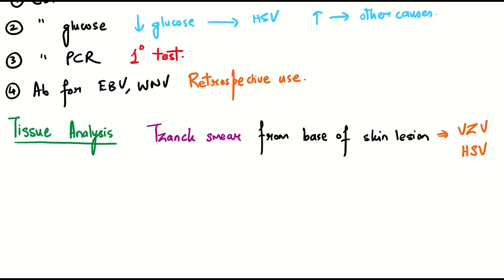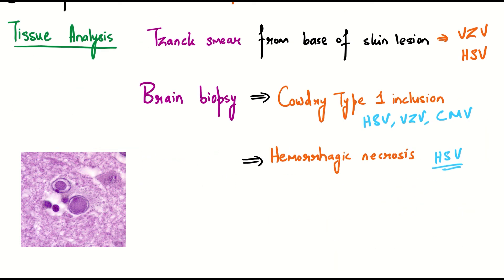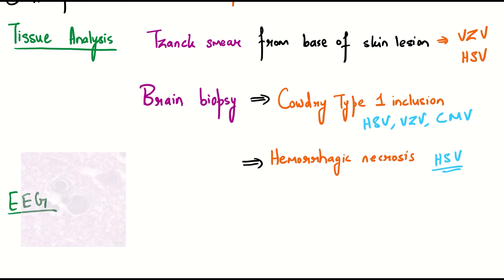Brain biopsy reveals Cowdry type 1 inclusion bodies and hemorrhagic necrosis in herpes simplex virus, varicella zoster virus, cytomegalovirus, and herpes simplex virus respectively. EEG will show temporal discharge in herpes simplex virus.